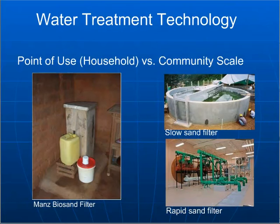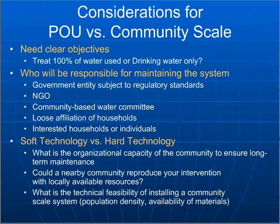As far as the technologies for water treatment go, you have two main tracks: a point-of-use track — household local systems such as the Manz biosand filter — and then the community scale. The community scale systems are your larger systems, such as a very large slow sand filter and a rapid sand filter. These are systems meant to treat entire communities, hundreds of consumers at one time, as opposed to the Manz filter, which is only meant for a single family.